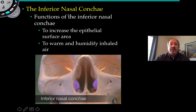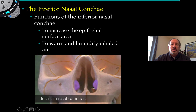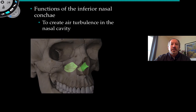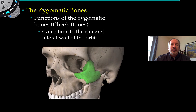Moving along, we have the inferior nasal conchae. The function of these bones is to increase the epithelial surface area — the mucous membrane surrounding this bone further increases the warmth and humidifies the inhaled air by secreting mucus. It's also ciliated, which provides a cleansing mechanism for incoming air. In addition, it creates air turbulence in the nasal cavity, which creates greater circulation and achieves cleansing, warming, and humidifying of the air.